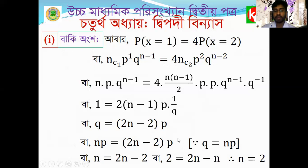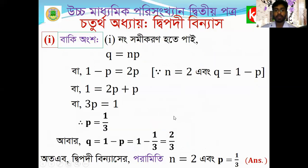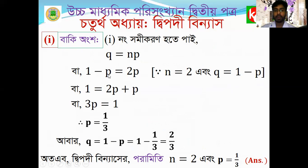When we take n equal to 2, and q equal to 1 minus p — because we know p plus q equals 1, so q equals 1 minus p — substituting: if 3p equals 1, then p equals 1/3. Since p equals 1/3, then q equals 1 minus p equals 1 minus 1/3 equals 2/3.